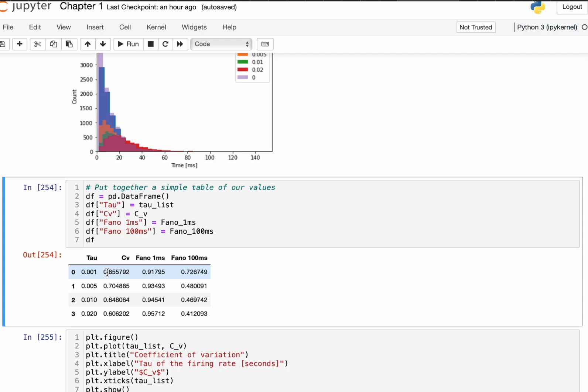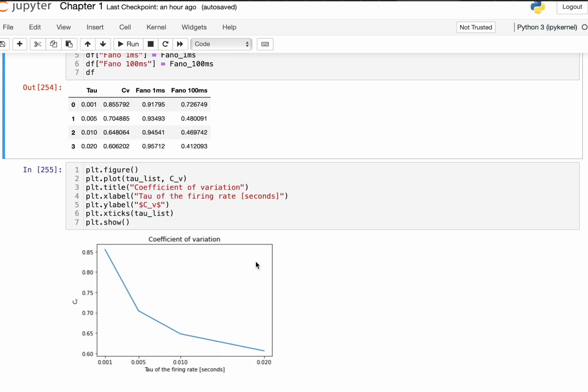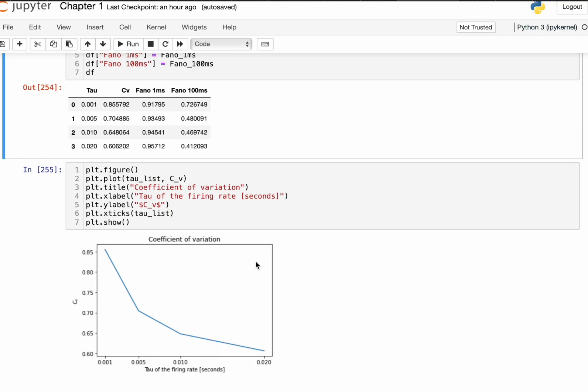And the coefficient of variation, again, is the best when the tau is very close to zero. So, the interesting thing is the relationship between the coefficient of variation and the refractory period. We can see that the coefficient of variation decreases as a function of the length of the refractory period. So, the longer the refractory period, the lower is the coefficient of variation. And that is everything from the second chapter.